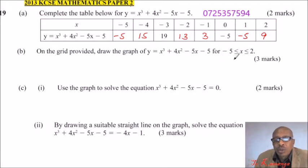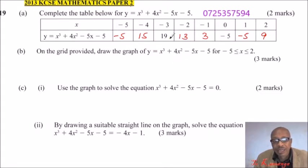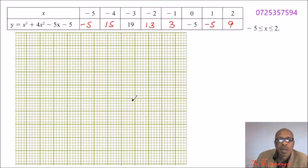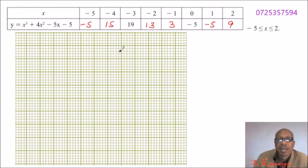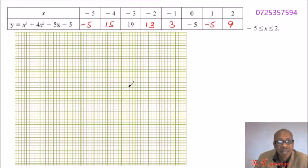Now I'm going to draw that on another page so we have the grid provided. Let's go ahead and draw our graph using the table we have filled in. This is the grid we are going to use. I've already inserted the table filled in section A. The highest value of x is 2 and the lowest is minus 5. The highest value of y is 19 and the lowest is minus 5.